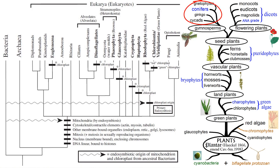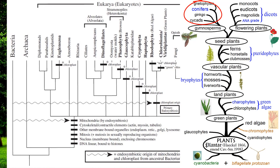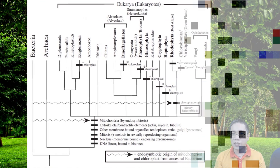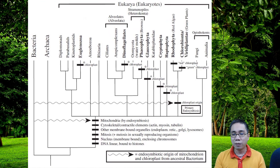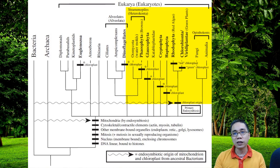So, we have diversification from one common ancestor. And also, you can see here plenty of chloroplasts in these groups here, in these plants here. This denotes plants in these groups.